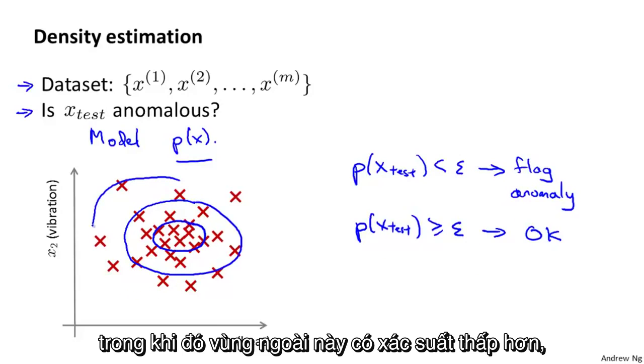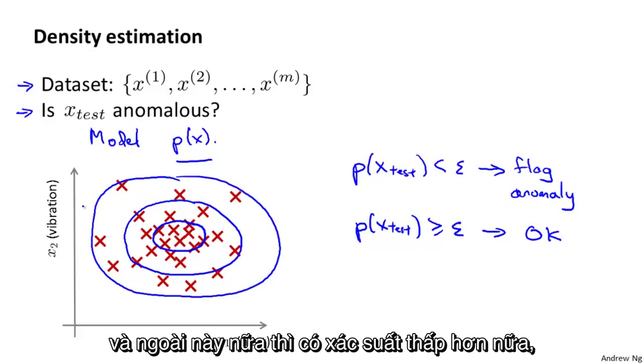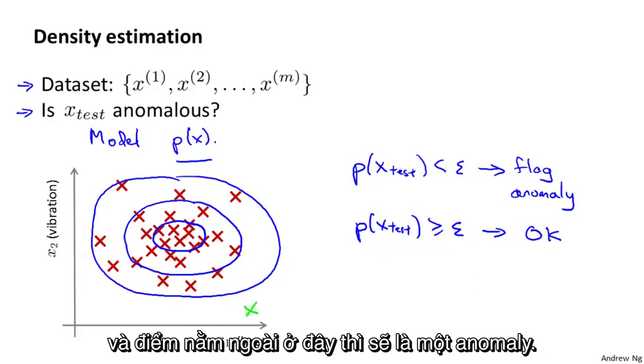Whereas points that are a little bit further out have lower probability, points that are even further out have somewhat lower probability, and the point that's way out here, the point that's way out there would be an anomaly.